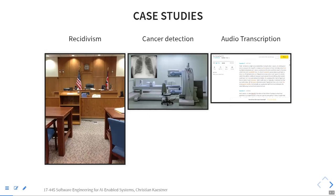We're going to talk about a couple of different scenarios. The one everybody talks about is recidivism — whether you should release somebody from jail early or grant bail. We can talk about cancer detection, where we want the tool to be equally good across gender or races. And then things that don't have immediate societal or medical implications, like audio transcription. What kind of fairness problems could we see there? Those domains are more the kind of things I'd expect some of you to work on.